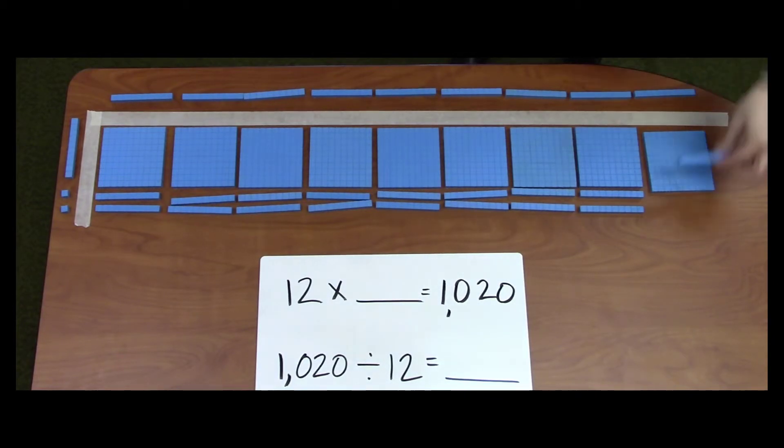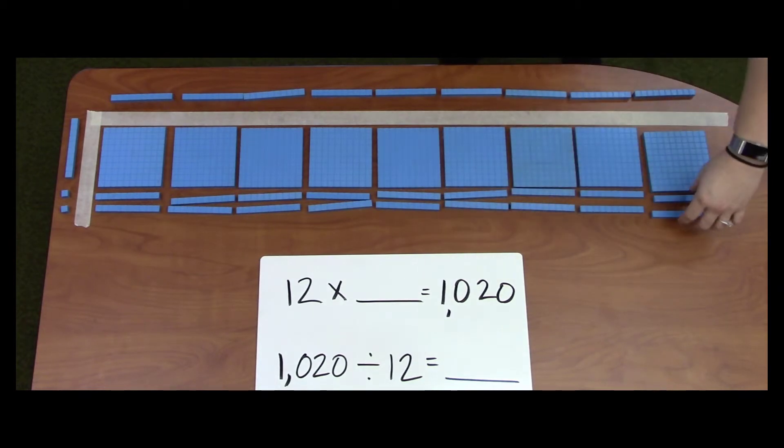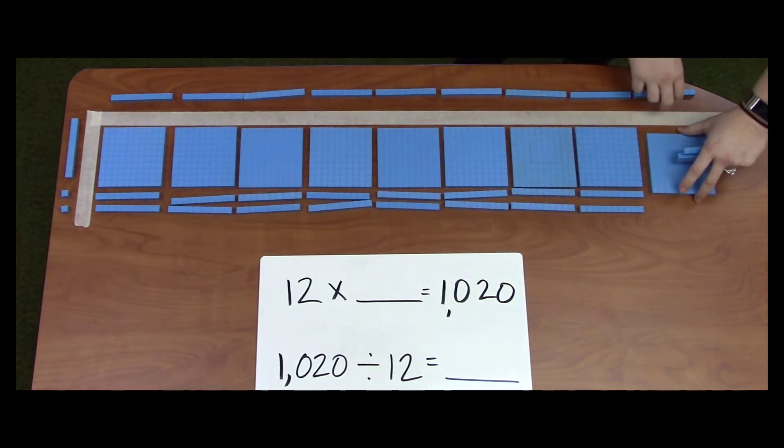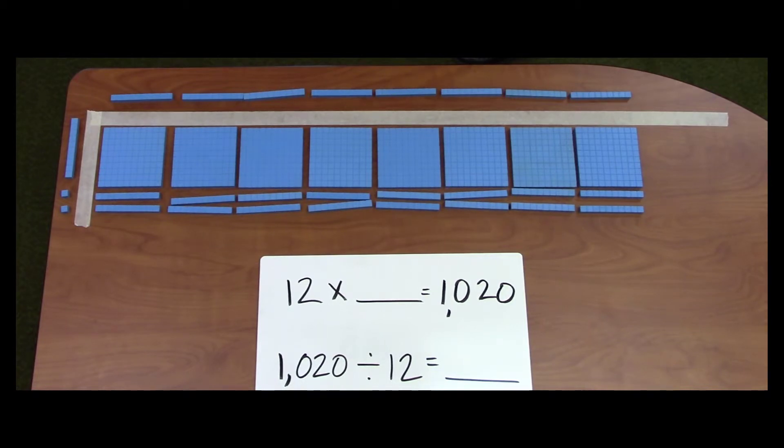If I place this down again, I will have 1,080, which is too much. So I will take it away. Since another group of 120 is too much, I know that I can't put another 10 rod at the top.